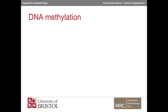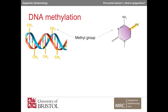DNA methylation involves the addition of methyl groups to cytosine in DNA. This turns the cytosine into 5-methylcytosine — the methyl group is added to the cytosine at the 5th carbon atom. A cytosine attached to a methyl group is said to be methylated. In animals, DNA methylation happens almost exclusively at cytosines (Cs) next to guanine (Gs), which are called CpG sites.